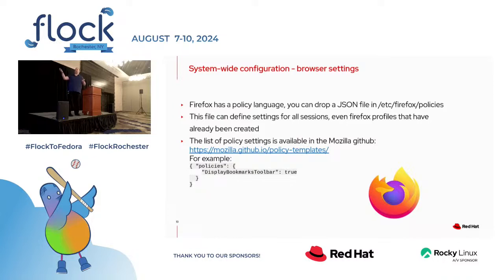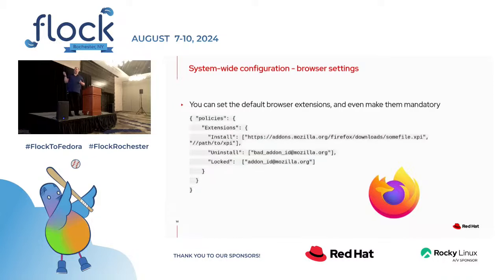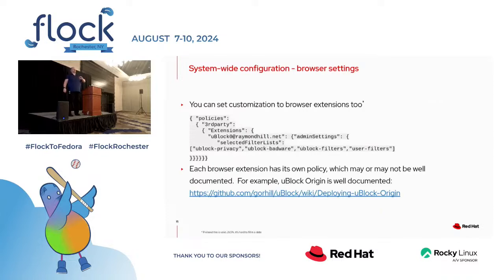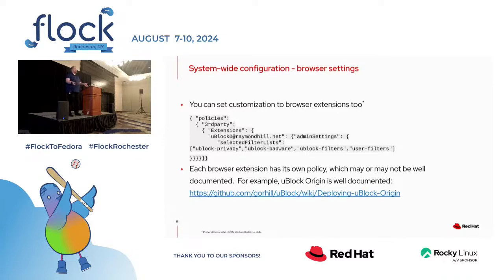There's a lot of different things you can do with the Firefox policy language. For example, you can deploy bookmarks, and more importantly you can deploy default Firefox extensions. If you want it to automatically install uBlock Origin, it will do it for you. You can also customize those browser extensions — uBlock Origin has its own special policy that you can include in the Firefox policy, so you can point it at different filters. uBlock's website actually describes how to do all these things, and there's even a policy file checker that you can paste your policy into and it will tell you whether it's valid.